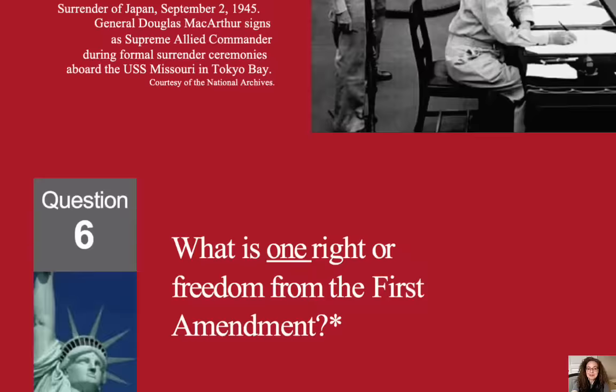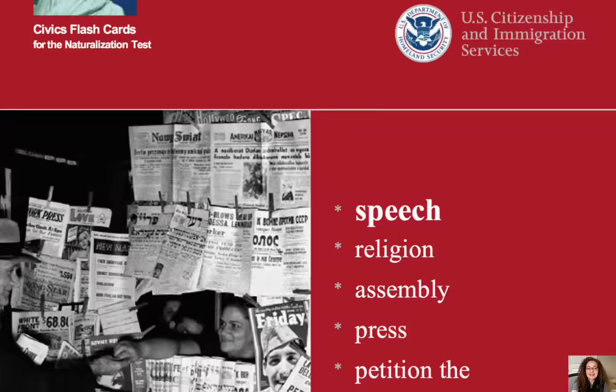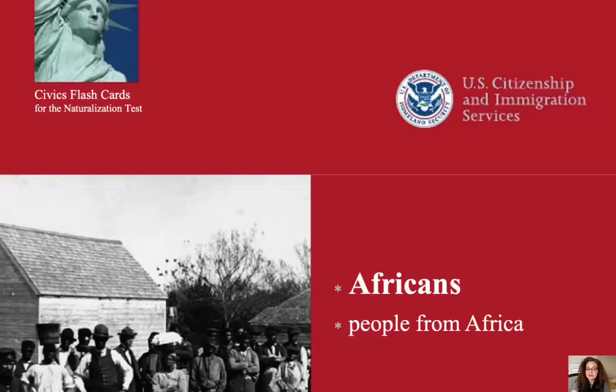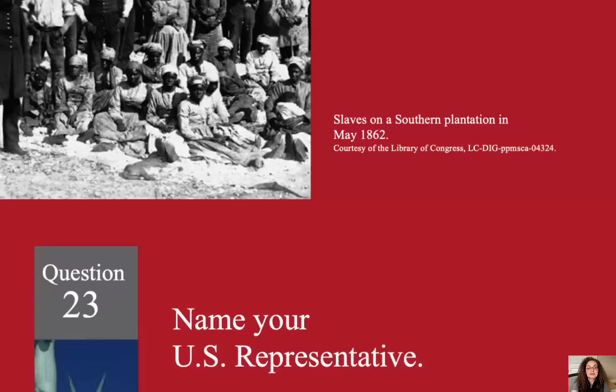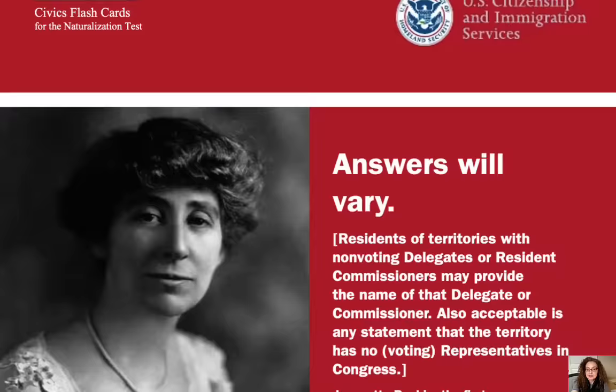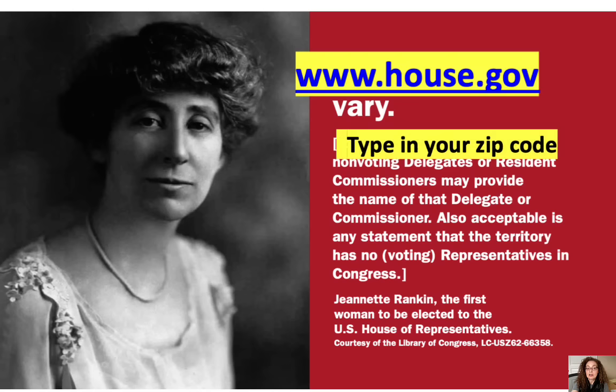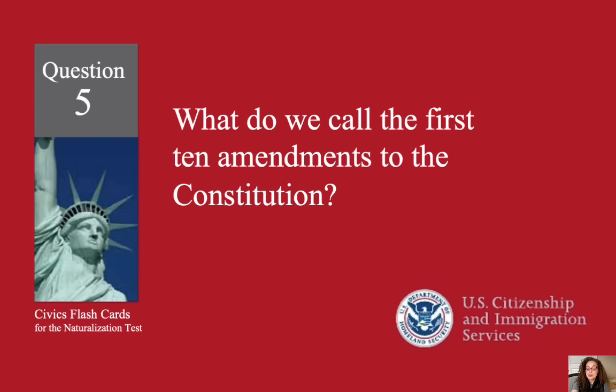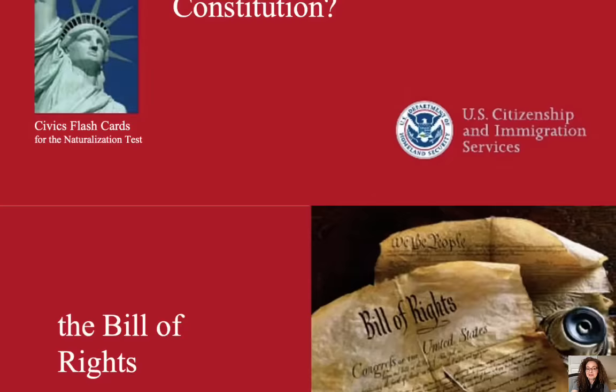What is one right or freedom from the First Amendment? Speech. What group of people was taken to America and sold as slaves? Africans. Name your U.S. representative. Answers here will vary. Remember to go to house.gov and type in your zip code and address. What do we call the first 10 amendments to the Constitution? The Bill of Rights.